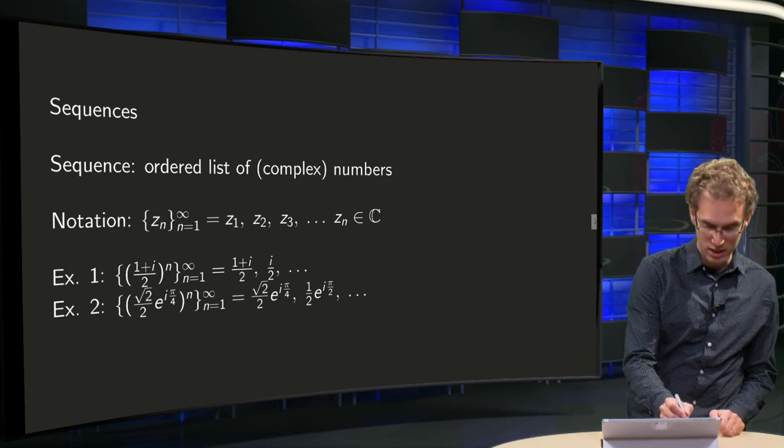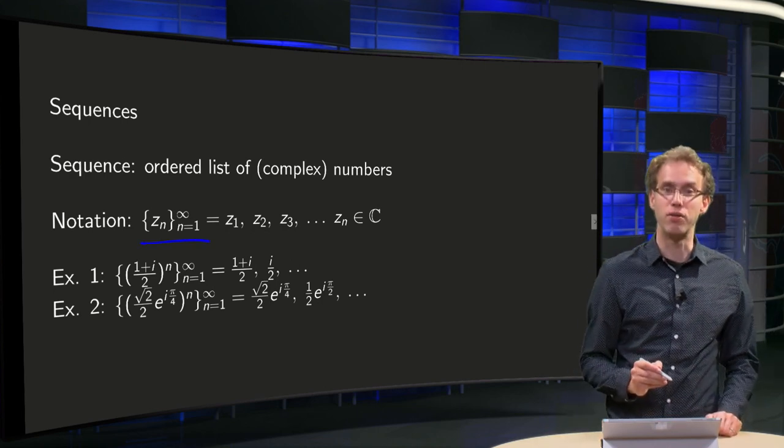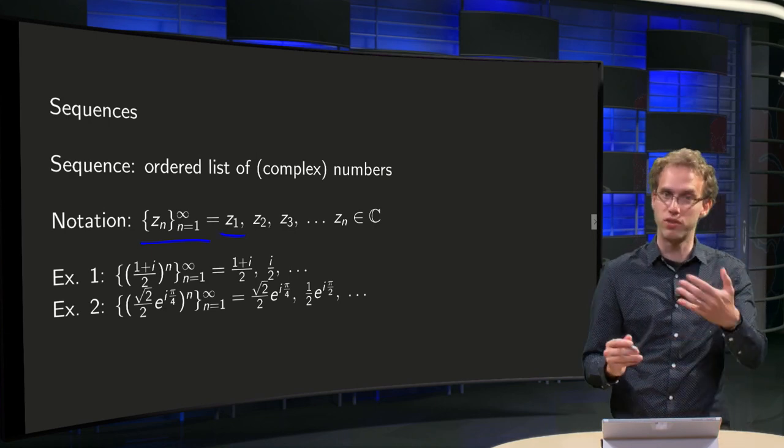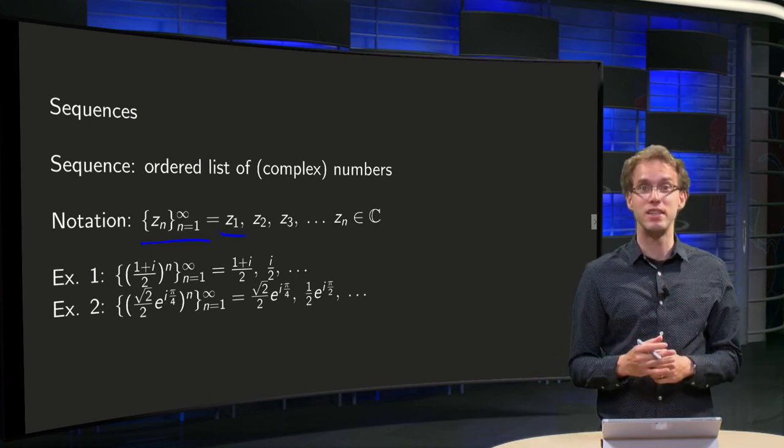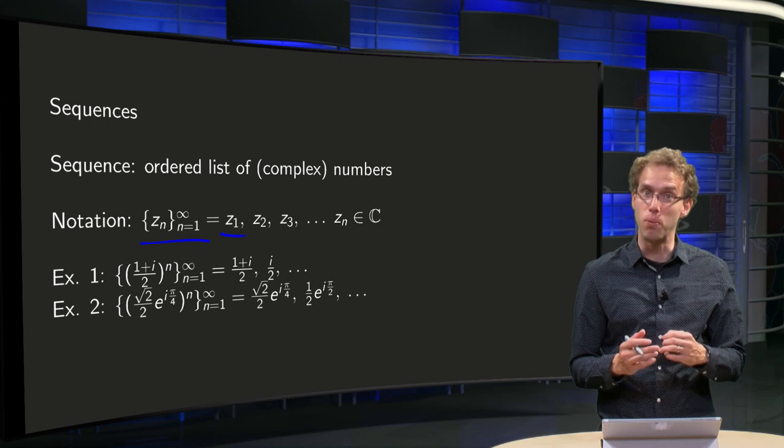denoted as {z_n}_{n=1}^∞, so z_1, z_2, z_3, etc., where now the z_n are numbers in C, complex numbers.